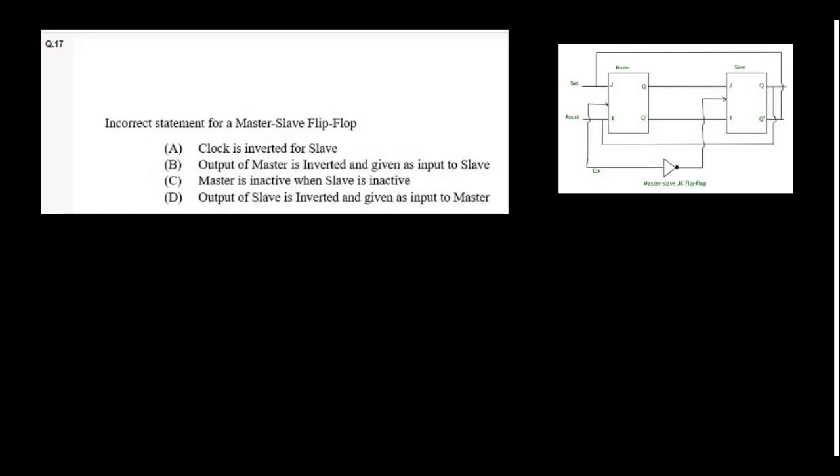Incorrect statement for a master-slave flip-flop: clock is inverted for slave—that is right. Output of master is inverted and given to the input—that is wrong. So the false statement is B. Other statements are correct. Only the mistake, the false statement is: output of master is inverted and given as input to slave.